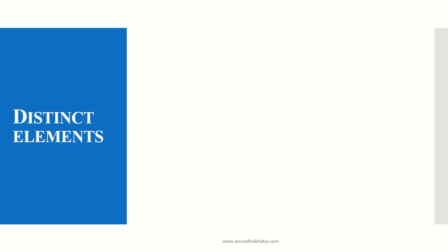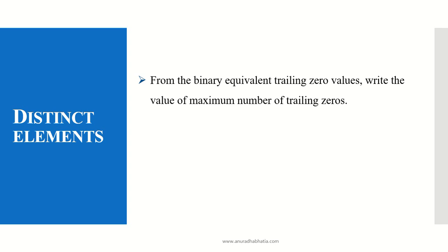We have to now find out the distinct elements. From the binary equivalent trailing zero values, we have to write down the maximum number of trailing zeros. We have 2 as the maximum value, so r = 2. Now we calculate the distinct value which is calculated as R = 2^r. Therefore, R = 2^2 = 4, so we have 4 distinct values.